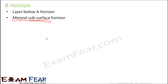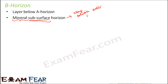Basically, B horizon is not the surface horizon, but when the surface horizon is lost due to soil erosion, it gets exposed. Talking about its composition, it is rich in minerals — this layer contains clay, soluble salts, and iron. That is why it is called the mineral subsurface horizon.